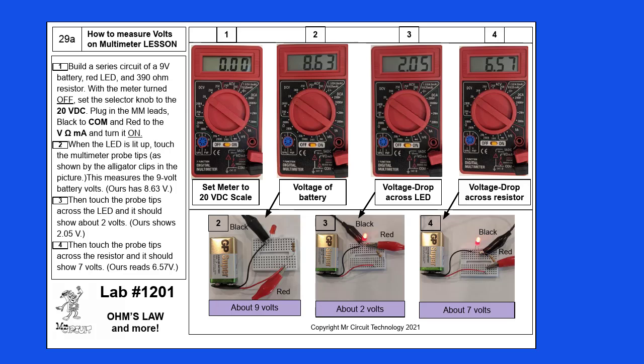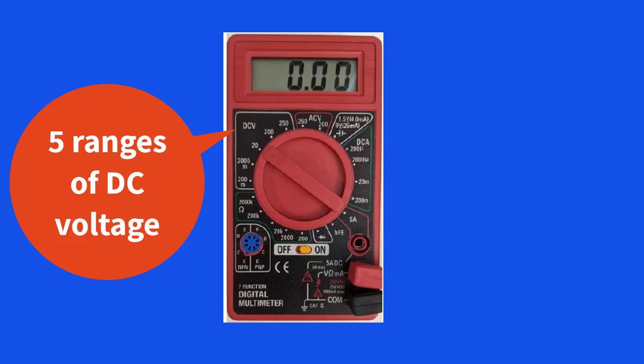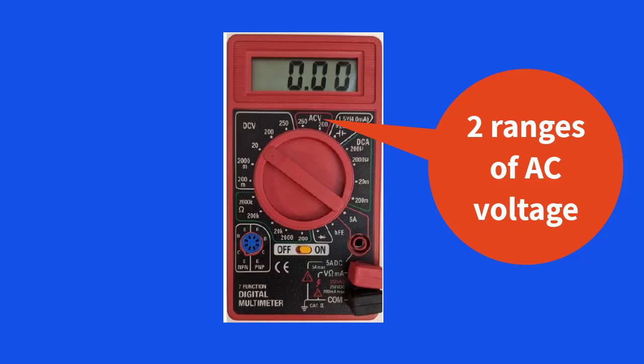The multimeter shown in this lab has five ranges of DC or direct current voltage, and two ranges of AC voltage. We're going to practice with measuring DC voltage.